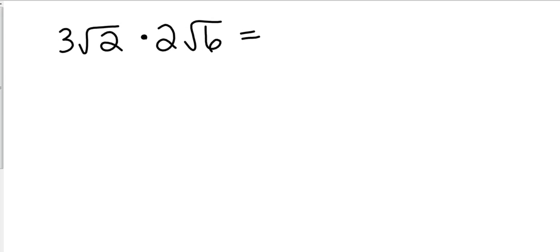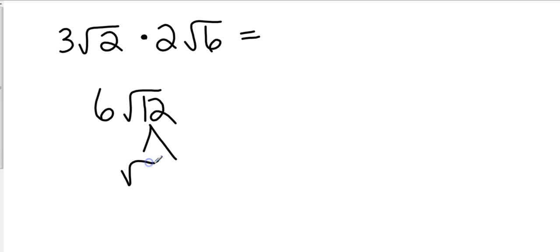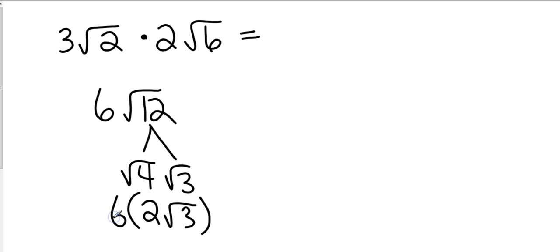When I have three square roots of two and two square roots of six, what do I multiply first? The numbers outside the radical. Three times two is six. Now, what is the square root of two times the square root of six? The square root of twelve. I don't have to have common radicals — I just multiply them. Am I done? No, because I can simplify the square root of 12. How? Four times the square root of three, and the square root of four is two. Don't forget the six — we multiply by the six. What's six times two square roots of three? Twelve square roots of three.